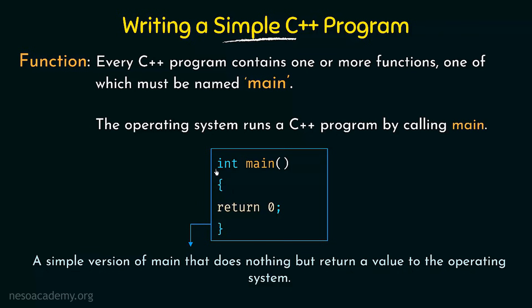Here in this block we see it is written int main with two brackets, and within curly braces it is written return 0. This is the main function that we are talking about. Within this main function, this is the body of the function and it is doing nothing but returning a value to the operating system — and what is it returning? It is returning 0. If you are new to programming you may not understand this returning concept, so don't worry about it. We are just trying to emphasize the structure of the main function. There are quite a few things inside this function, so let us break them down and understand each one by one.